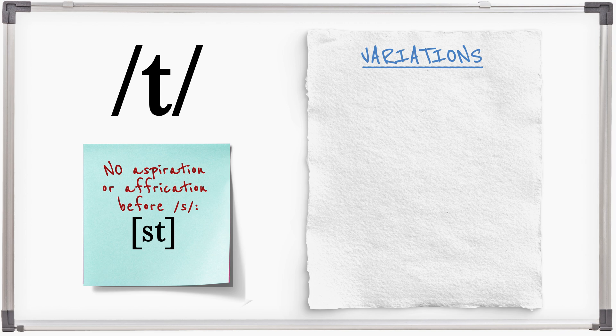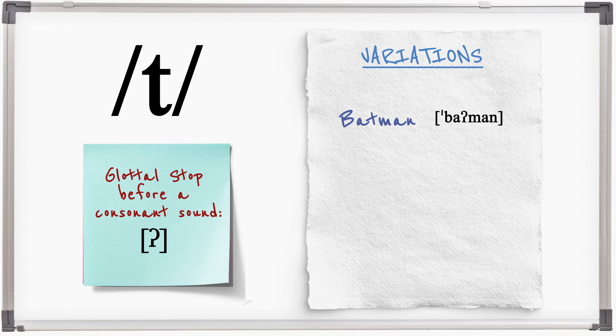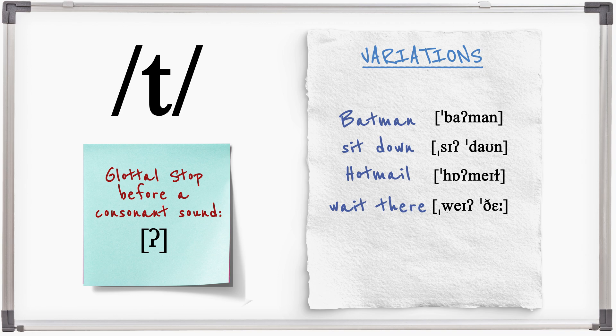Where T appears at the end of a syllable, it can turn into a glottal stop if a consonant follows it. Batman, sit down, hotmail, wait there.